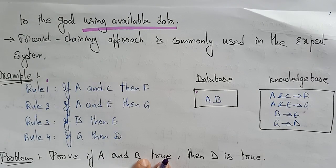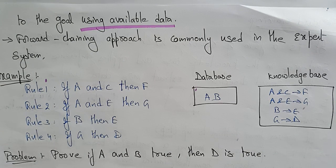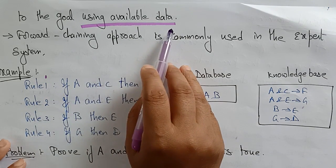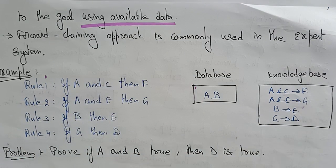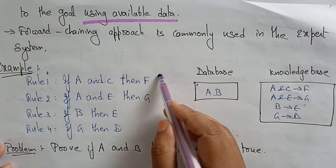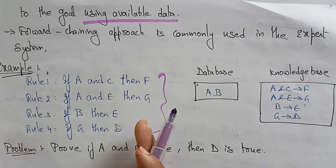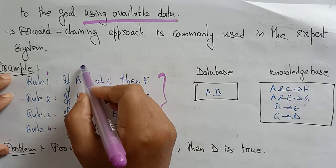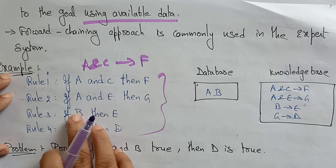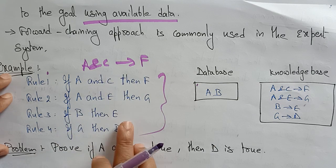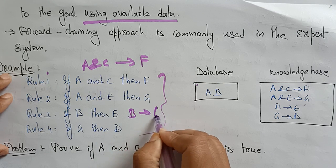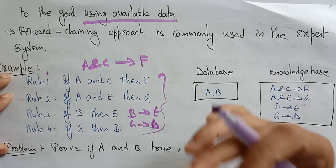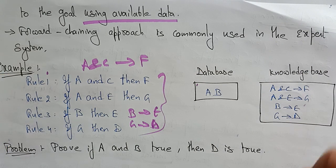Let's see an example of forward chaining — how forward chaining takes place. With the help of available data and a set of rules, we are going to reach the goal. Here some rules are present in the knowledge base: if A and C then F; if A and D then G; if B then E — that is B implies E; and G implies D. These are the rules given.